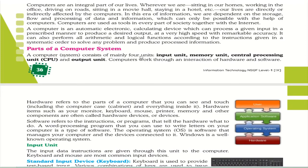A computer comprises two parts: hardware and software. Hardware is the physical component which we can see and touch, like the cabinet of the computer, monitor, keyboard, mouse, and printer — all these categories come under hardware, which we can see as well as touch.